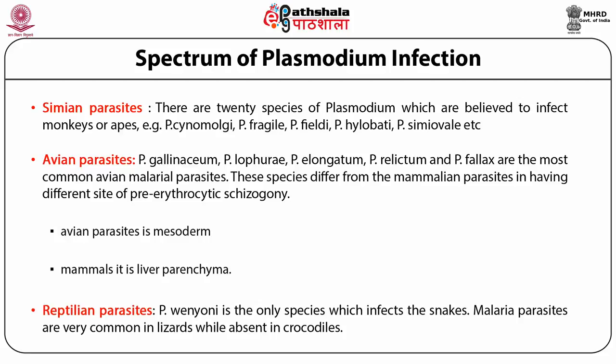Plasmodium ovale causes ovale malaria. The symptoms are comparable to benign tertiary malaria, and if left untreated it can last for about one year. Plasmodium malariae causes quartan malaria. The bouts of temperature have a 72-hour periodicity, symptoms are much similar to benign tertiary malaria, and untreated cases can last about 20 years.